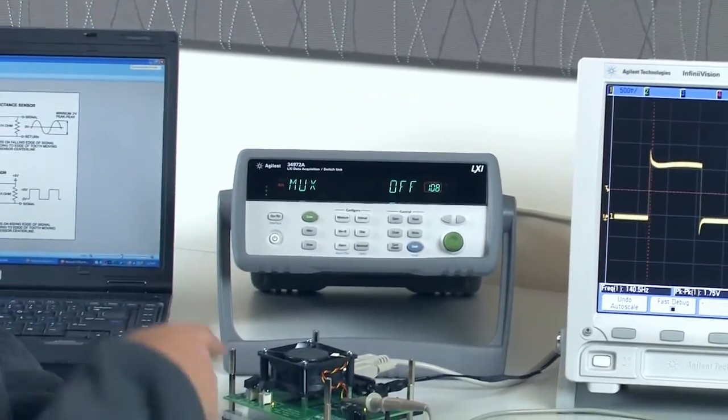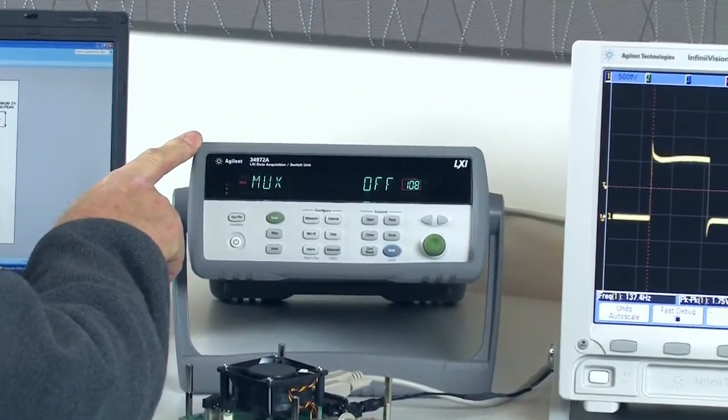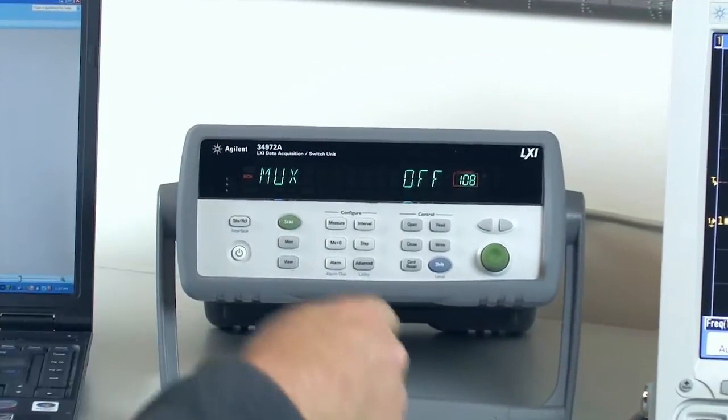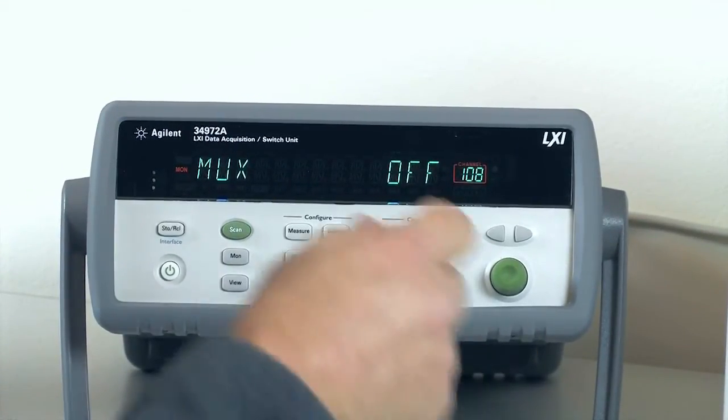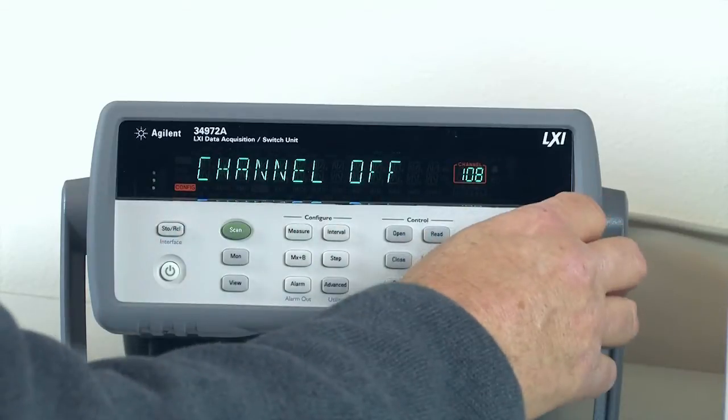So what I'm going to use instead is the Agilent 34972 here to measure that pulse, and we're going to turn it into RPM. So first I have to set up my measurement. I'm going to turn the channel on.